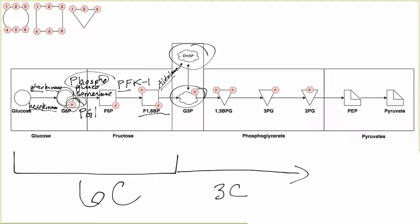The next enzyme in the pathway interconverts dihydroxyacetone phosphate and glyceraldehyde-3-phosphate. This is also an isomerase — triose phosphate isomerase — because these are now three-carbon, or triose, molecules.